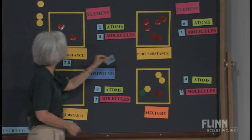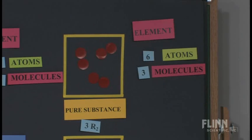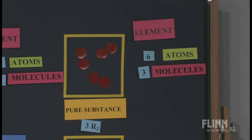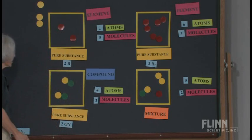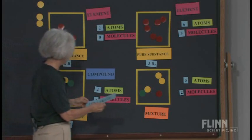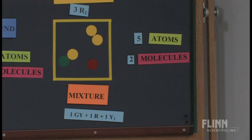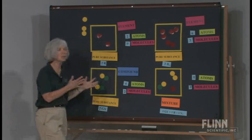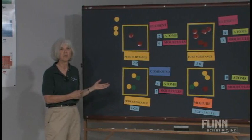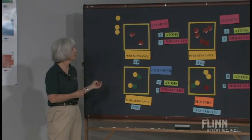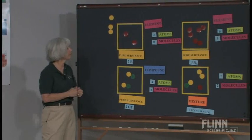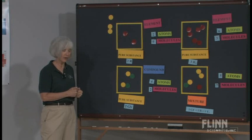And then over here, we have three R2. And lastly, for our mixture, we have one GY, we have one R, and we have one Y2. And this would be an introduction to the activity that I'm going to have my students perform. And so this would be actually up there on the board for them for reference.